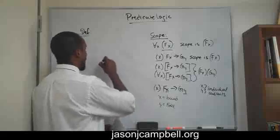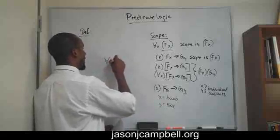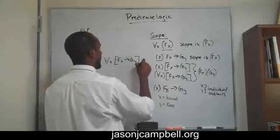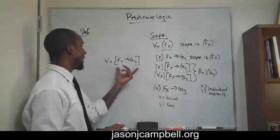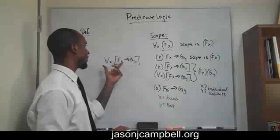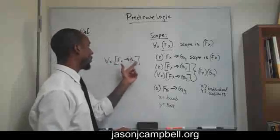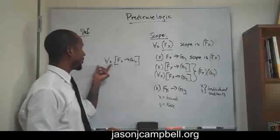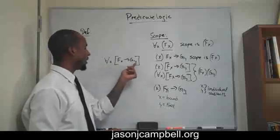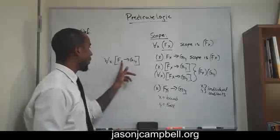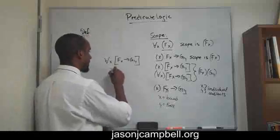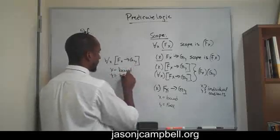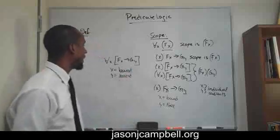However, if we bracket the whole conditional, then we are saying that for all x, the entire statement — if x is an f, then y is a g — is attributed to the universal quantifier. In that case, both individual constants x and y are bound. So x becomes bound as before, but now y is also bound, and both x and y are bound.